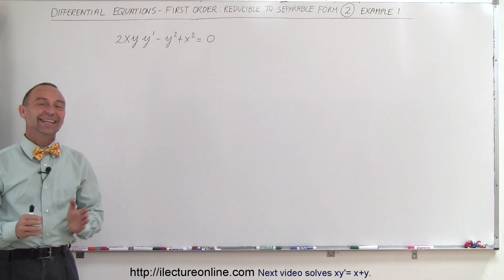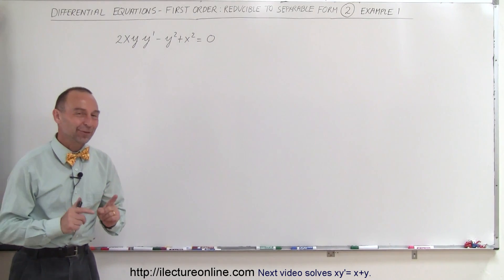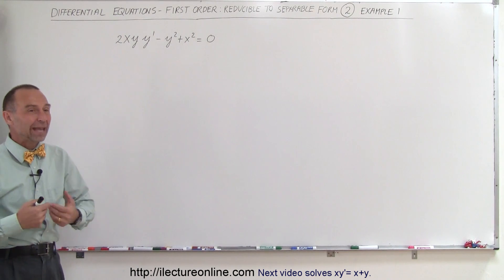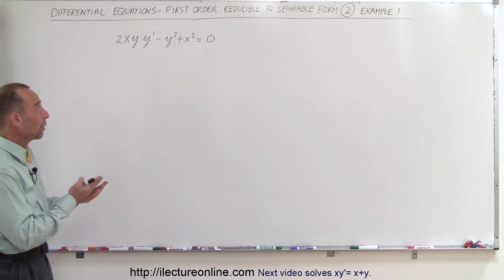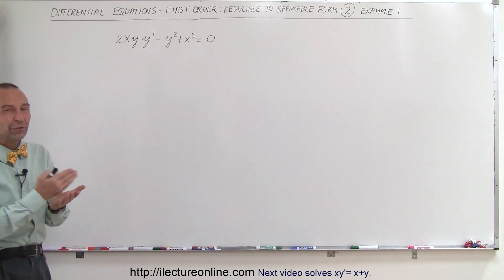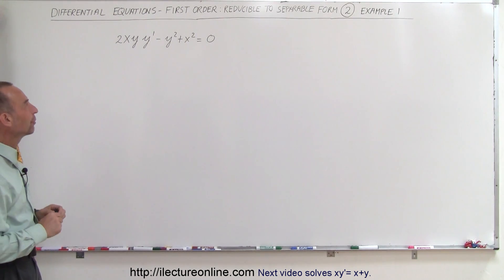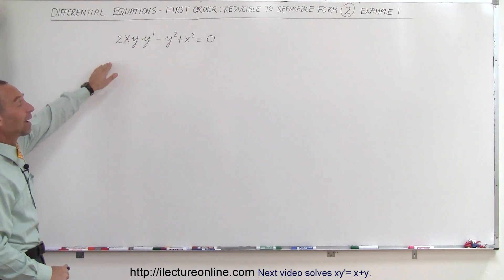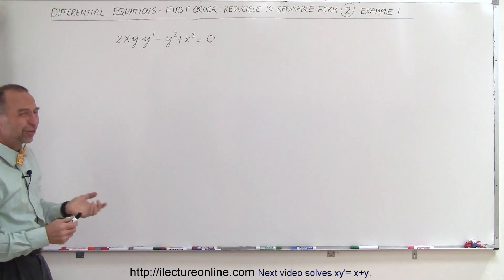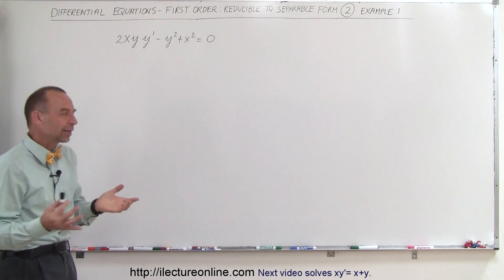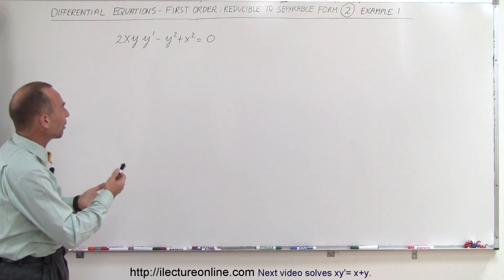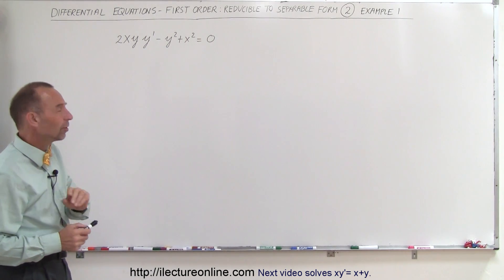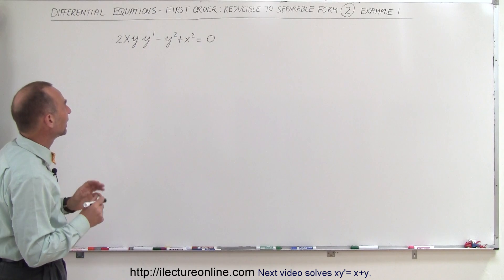Welcome to Lecture Online. Here we're going to use our first example to show you how to use that technique where we have a situation where we end up with y over x that we want to substitute for u. In short, let's say we have an equation like this. At first it doesn't appear like you want to make a substitution of y over x, but let me show you what we can do here.